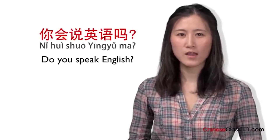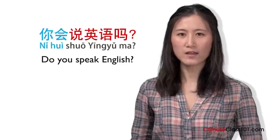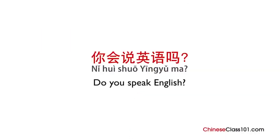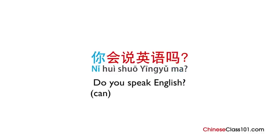Here is a common, slightly informal way to say it: 你会说英语吗? Let's break that down. 你 means you. 会 means can. 说 means speak. 英语 means English. And 吗 is the question mark particle — put it at the end of the sentence with a low tone. All together: 你会说英语吗?